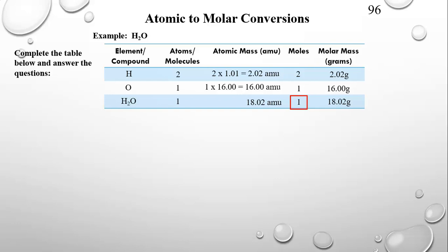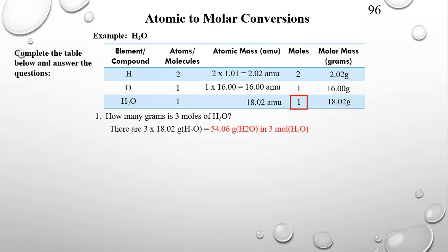Let's answer some questions — it's just like cooking. You have a recipe to bake a cake but need to bake five cakes, so you multiply all ingredients by five. Question one: How many grams is 3 moles of H2O? One mole of H2O is 18.02 grams. So three moles of H2O equals three times 18.02, which is 54.06 grams of H2O. When you do chemistry, always write the number, the unit of measurement, and the substance in parentheses — that's critical.